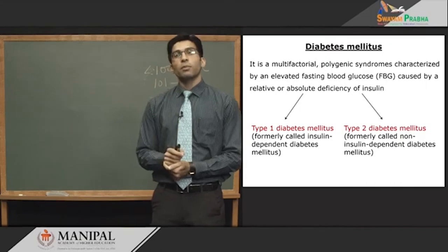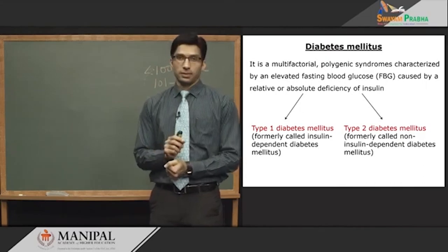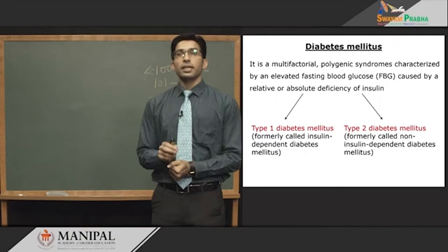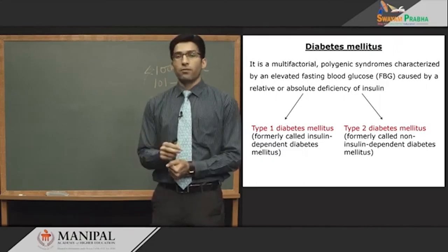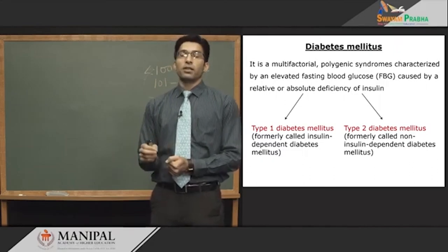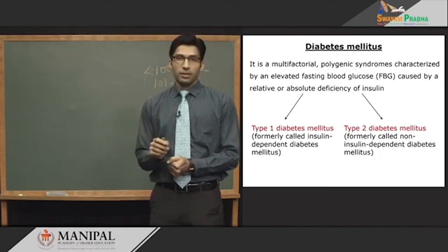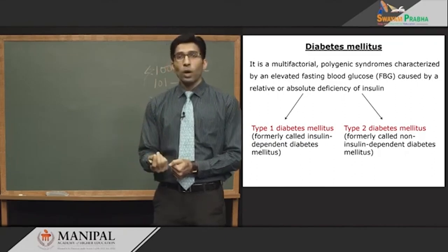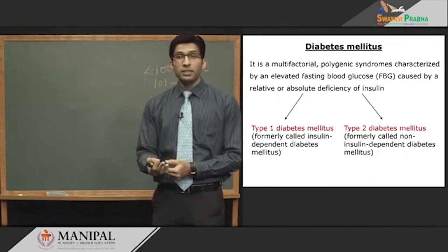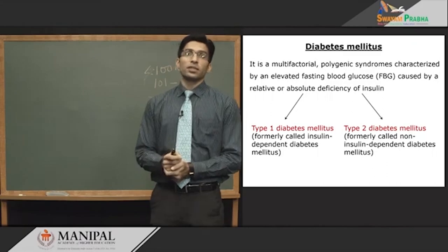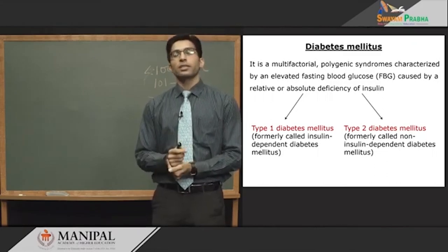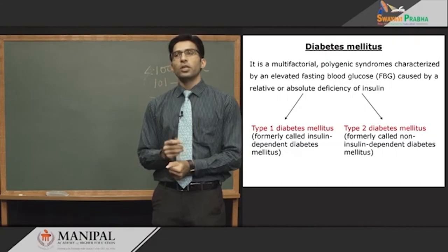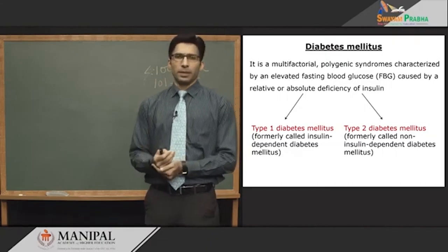The cause of type 2 diabetes: first, the important cause is insulin resistance; and second, at a later stage, it causes beta cell failure. There are many risk factors associated with this, such as increased weight, making it essentially a lifestyle disorder.